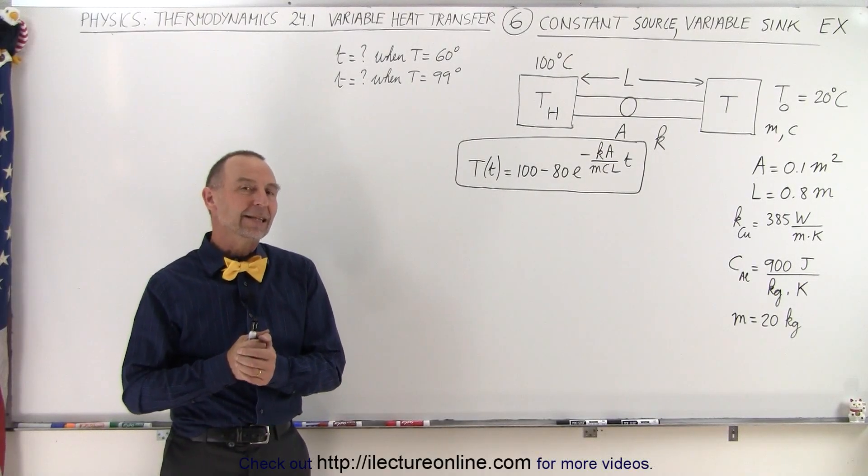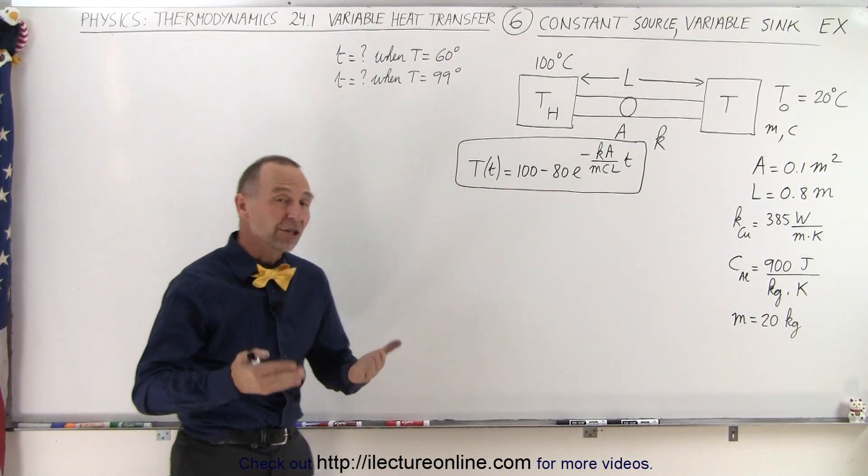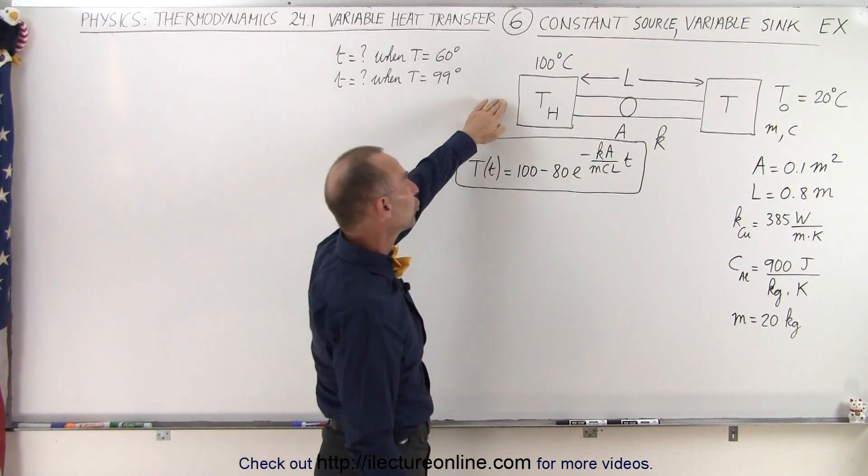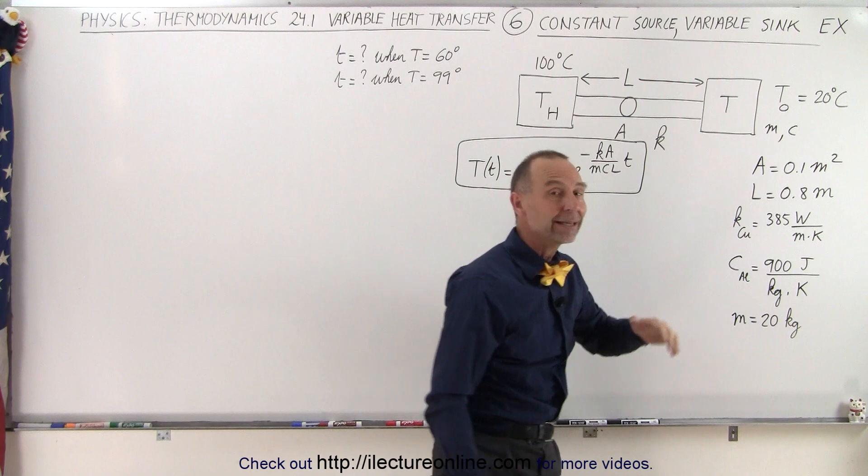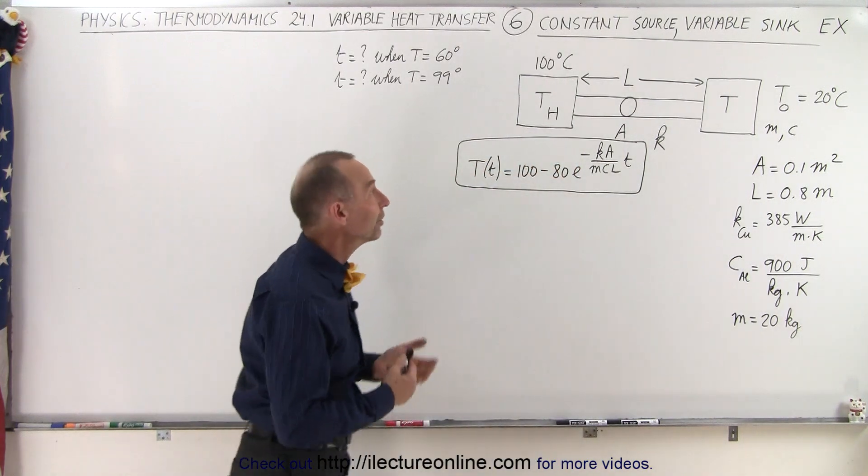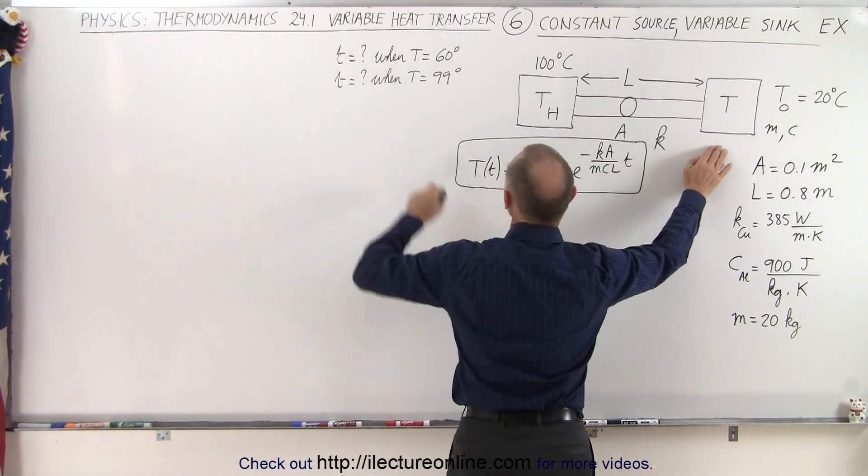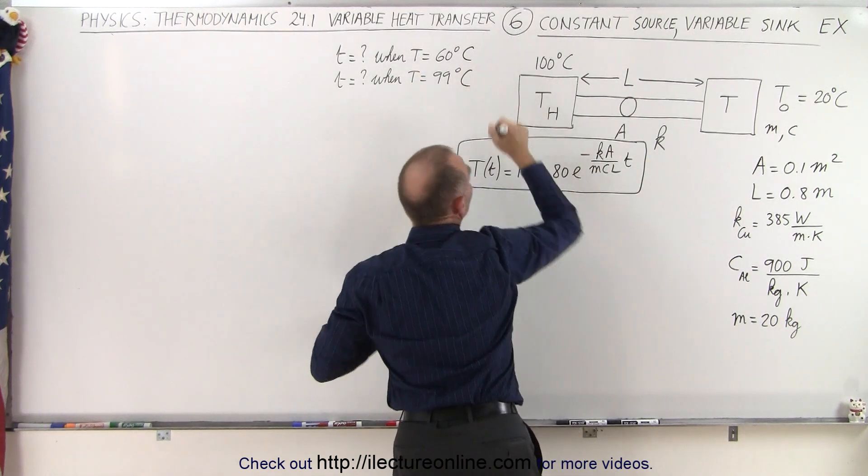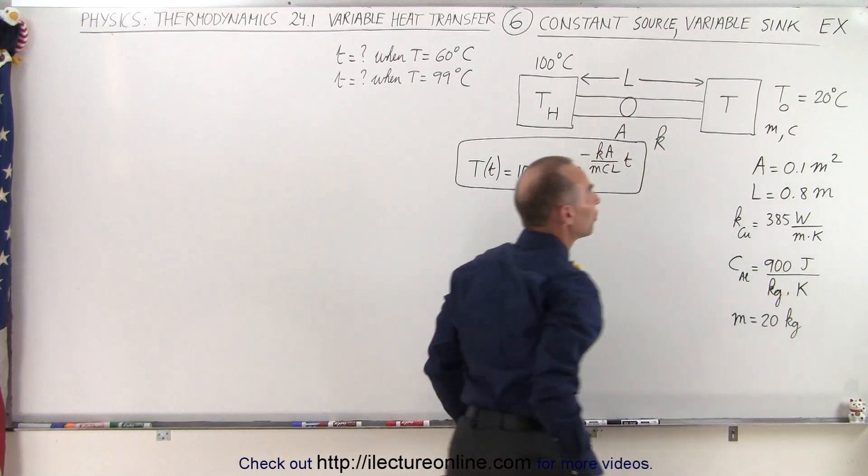Welcome to our lecture online. Now that we figured out the equation in the previous video for a case where we have a constant heat source and a variable heat sink, let's calculate how long it will take for the heat sink to reach a temperature of 60 degrees centigrade if it started at 20 degrees centigrade.